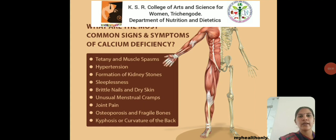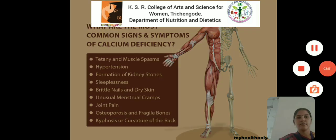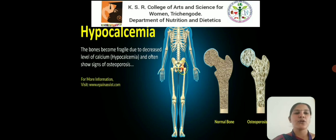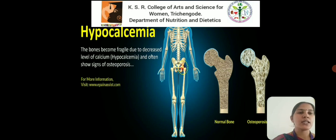The common signs of calcium deficiency include tetany and muscle spasms, hypertension, formation of kidney stones, sleeplessness, brittle nails and dry skin, unusual menstrual cramps, joint pain, osteoporosis and fragile bones, and kyphosis or curvature of the back. The deficiency of calcium causes hypocalcemia. The bones become fragile due to the decreased level of calcium, and hypocalcemia often shows signs of osteoporosis. You can see the difference between the normal bone and the bone affected by osteoporosis.